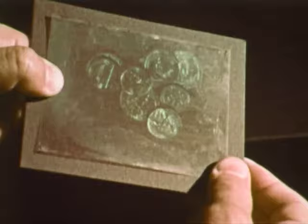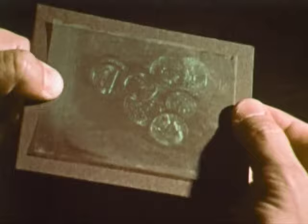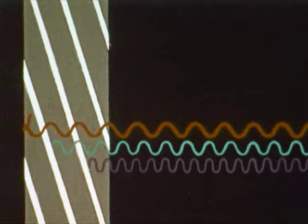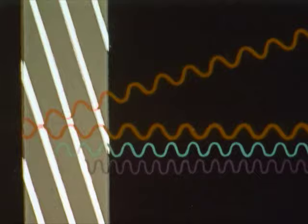Why does white light reconstruct this kind of hologram? A cross-section of the emulsion looks like this. White light approaches and passes through the film. The mirror planes are spaced to reinforce only the wavelength used to make the hologram. Because the film shrinks in processing, the green color of shorter wavelength is reinforced rather than the red.